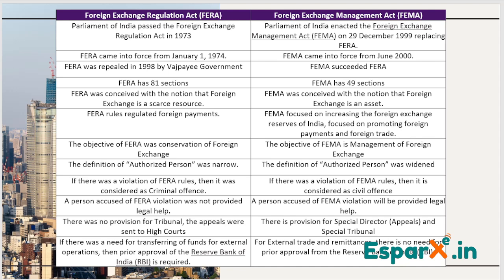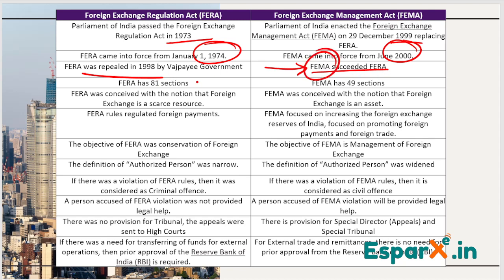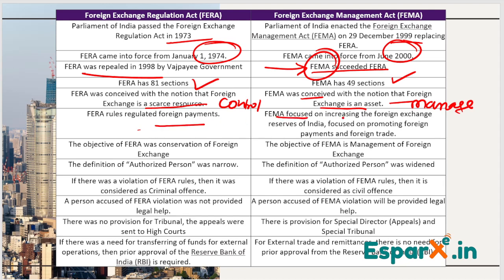Looking at specific differences: FERA came into force in 1974 and FEMA came into force in 2000. FERA was repealed in 1998 by the Vajpayee government and was succeeded by FEMA. FERA had 81 sections while FEMA had 49 sections. FERA was conceived with the notion that foreign exchange is a scarce resource that needs to be controlled. FEMA, however, focused on managing and increasing foreign exchange results for India.